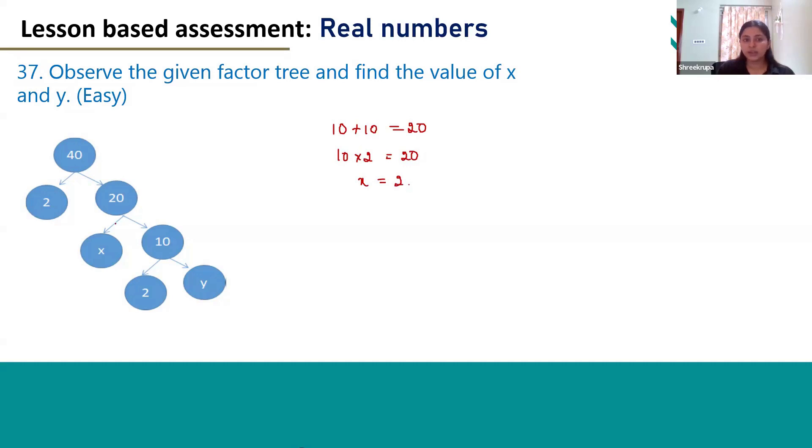10 times 2 is 20, that is why x value is 2. And again 10 is factorized here. One factor of 10 is 2 and we have to find out the other factor. How many times we should multiply 2 to get 10?